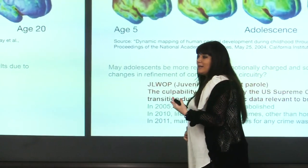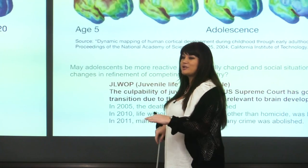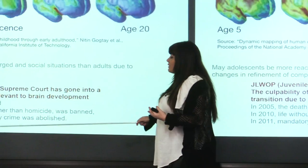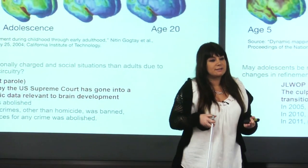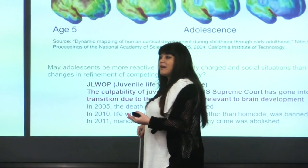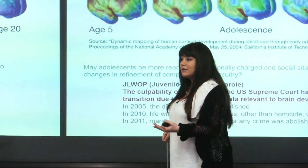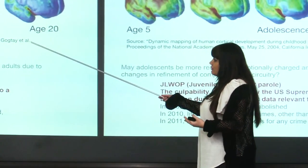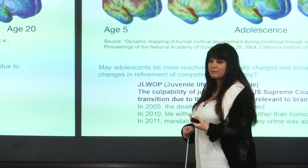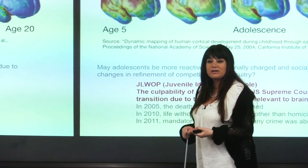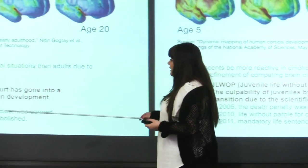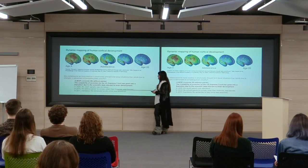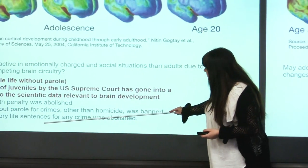This makes adolescents more vulnerable to be in conflict situations. This was already discussed for cases of juvenile life without parole — are adolescents supposed to be sentenced? As a result of recent findings about this developmental stage of the brain, constitutional changes occurred in the U.S. Supreme Court. In 2005 the death penalty was abolished for juveniles, in 2010 life without parole for crimes other than homicide was banned, and in 2011 mandatory life sentences for any crime were abolished.